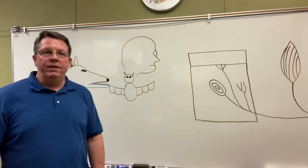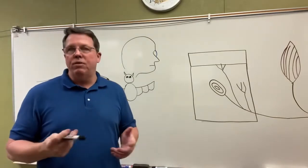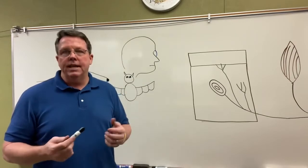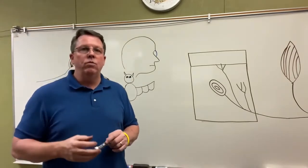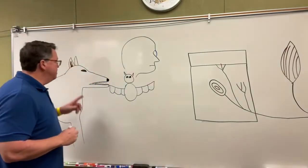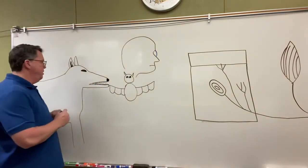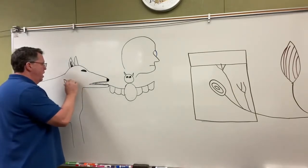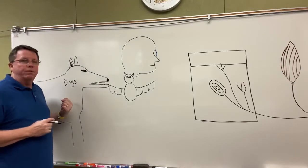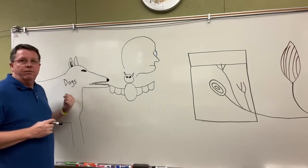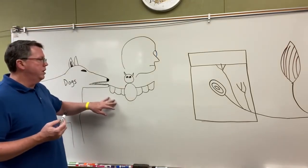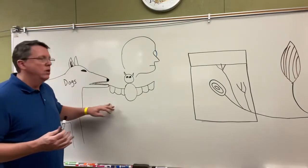Hi everybody, today we're going to be talking about rabies. Most people think of dogs when they hear about rabies, but rabies is a virus that can actually go from animals to humans. The most common way people know about getting rabies is from dogs. If you go to some countries like the Philippines, it's still pretty common for people to get rabies from a dog bite.